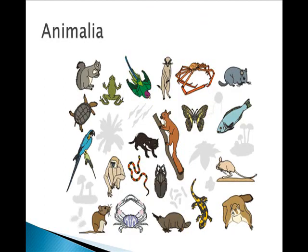And finally we come to the Animalia. Animalia are characterized by being multicellular and eukaryotic. They don't have cell walls, except for one group. They're also internal heterotrophs. Some examples include insects, mammals, birds, and worms.